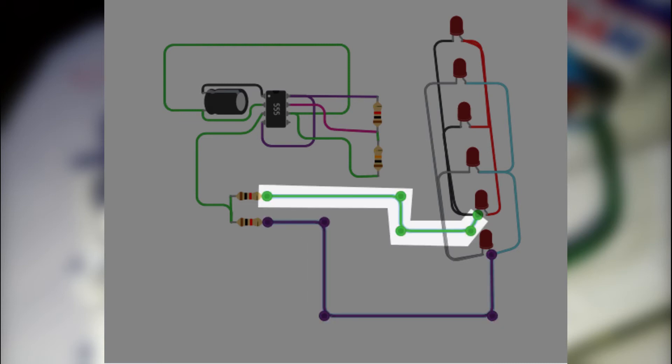Connect the negative terminal of the second block of LEDs to the other end of the resistor which is connected to pin number 3 of the 555 IC.